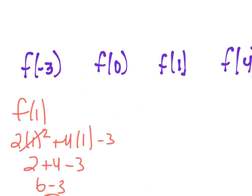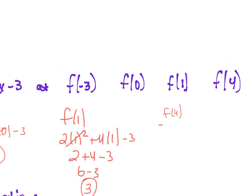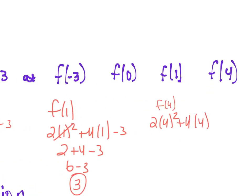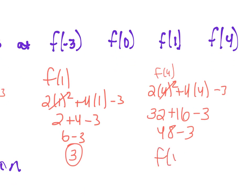Now f of 4: 2 times 4 squared plus 4 times 4 minus 3. What's 4 squared? 16. 16 times 2 is 32. Plus 4 times 4 is 16 minus 3. What's 32 plus 16? 48. 48 minus 3 is 45. So f of 4, when I plug in 4, I get out 45. Questions? You guys okay with evaluating?